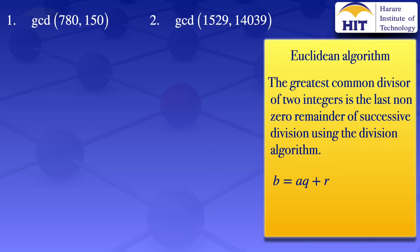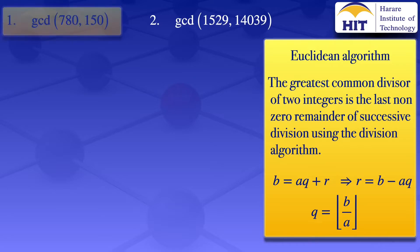From that equation, we can get our remainder as B minus AQ, and the quotient is the floor value of B divided by A. So looking at question number one, where we have the greatest common divisor of 780 and 150.